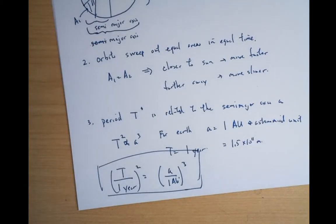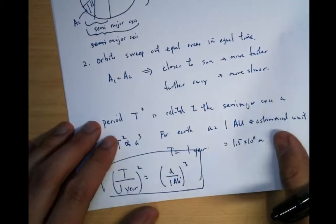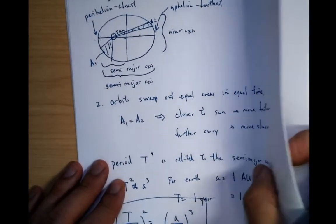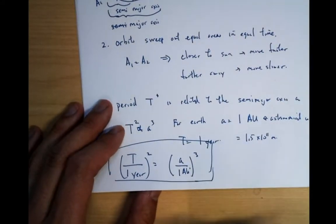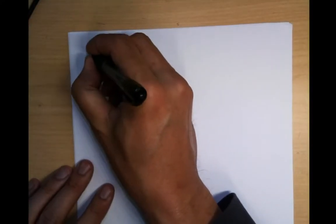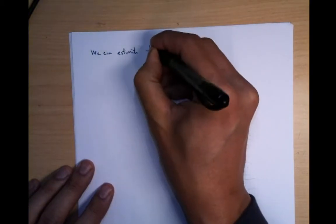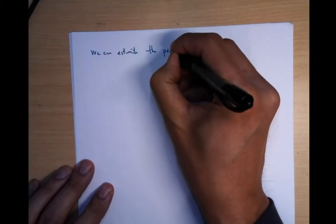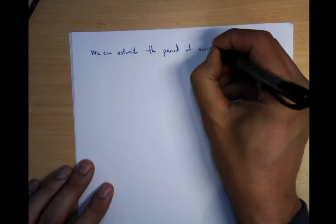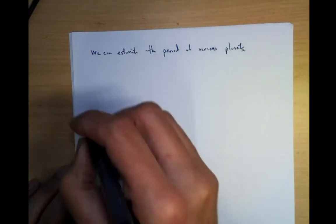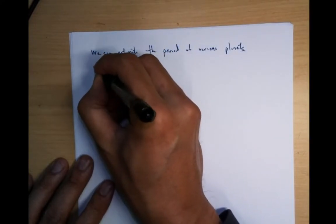So now, because of this, you can use this law right here, this law right here to estimate the periods of various planets. So we can, so as an example, Jupiter.